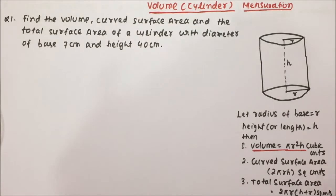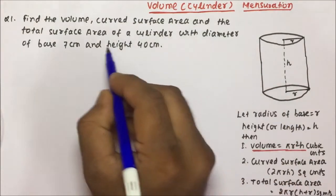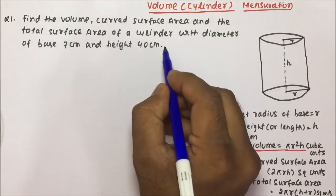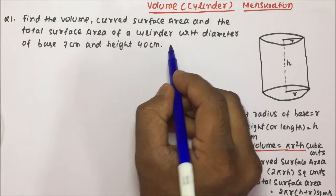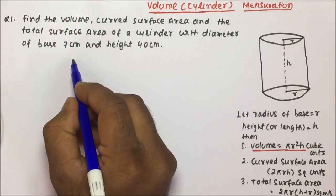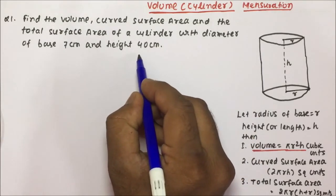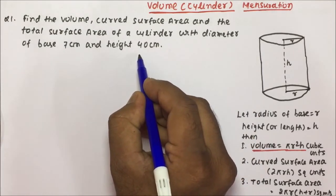Find the volume, curved surface area, and the total surface area of a cylinder with a diameter of base 7 cm and height 40 cm.